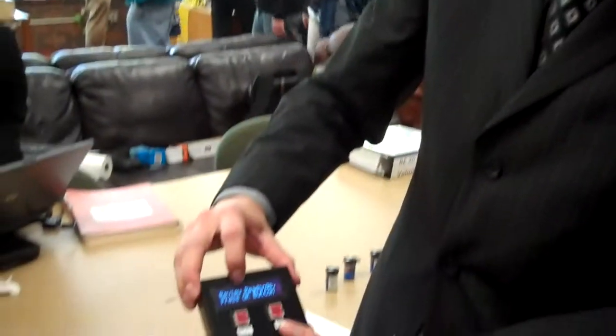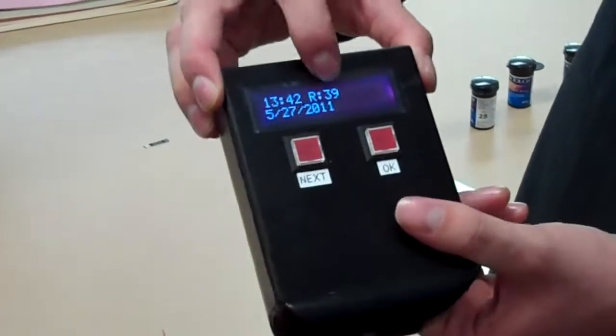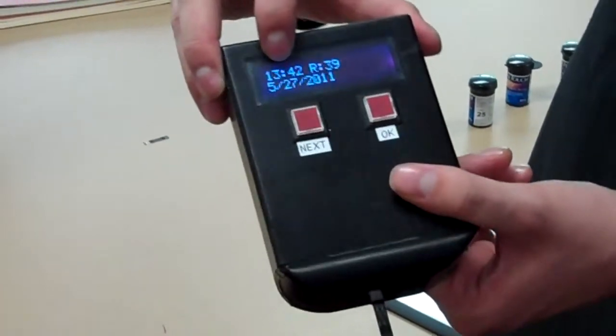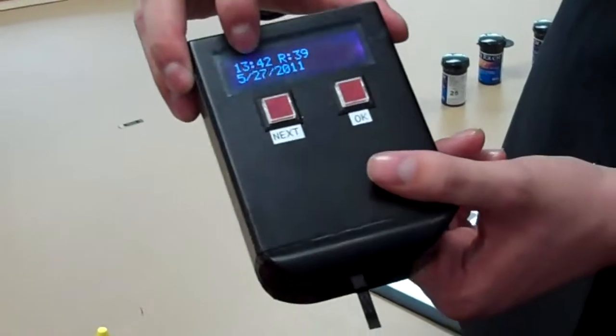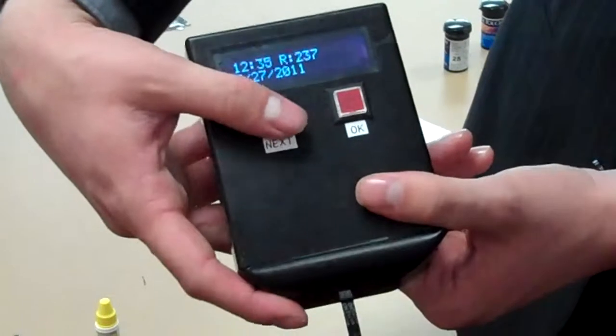So I hit next, and now I can review my readings. You can see that was our last reading right there. It gives it a time stamp in military time so we can tell all throughout the day what time it happened and the time of day. We can cycle through here and see all of our old readings.